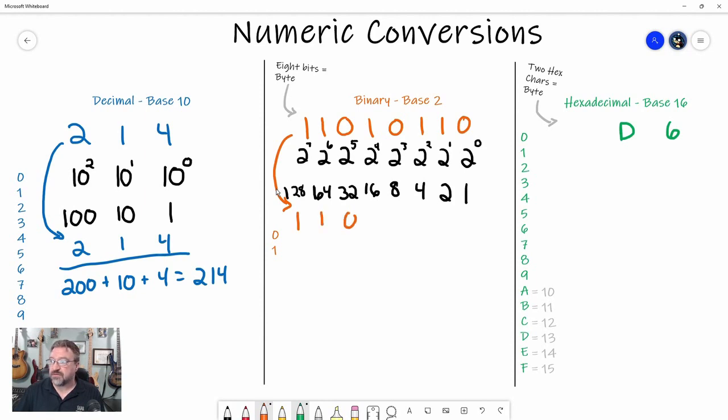So I've got this 1, 1, 0, 1, 0, 1, 1, 0. And we're going to do the exact same math calculation as we did with decimal. So 1 times 0 is 0. 2 times 1 is 2. 4 times 1 is 4. 8 times 0 is 0. 16 times 1 is 16. 32 times 0 is 0. 64 times 1 is 64. And 128 times 1 is 128.